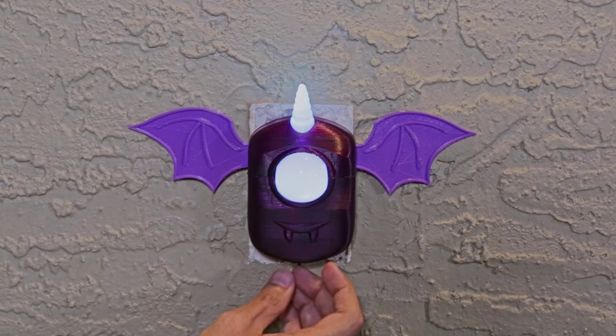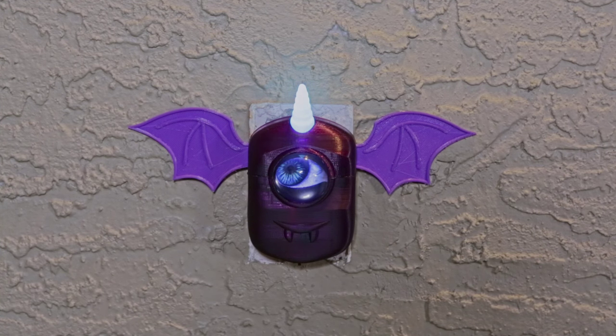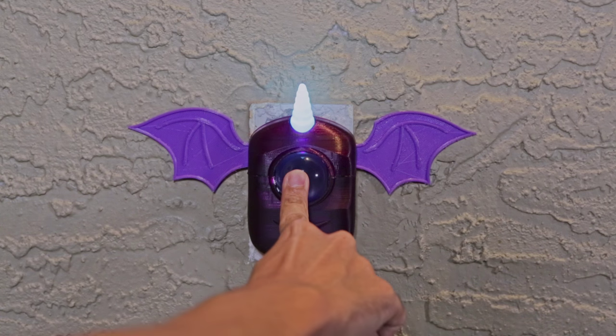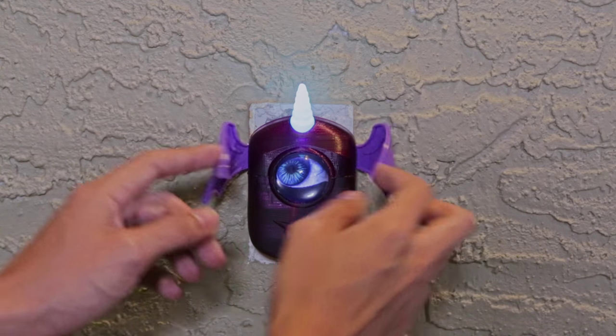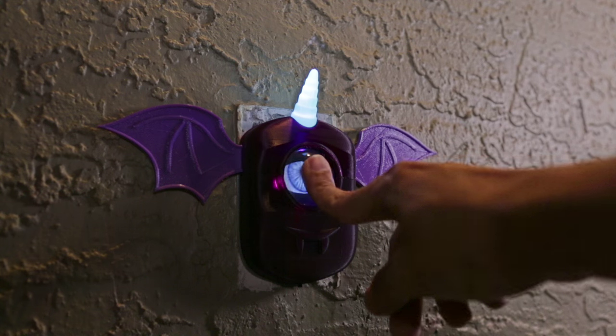Flip the switch underneath the chin and watch it come alive. Now we have a one-eyed, one-horned, flying purple people eater doorbell, just in time for Halloween.